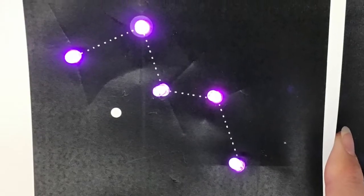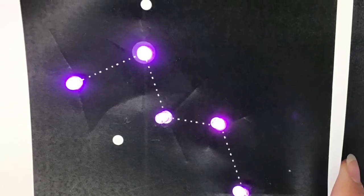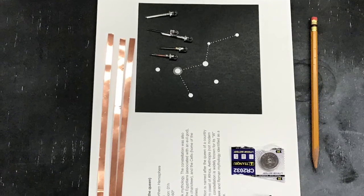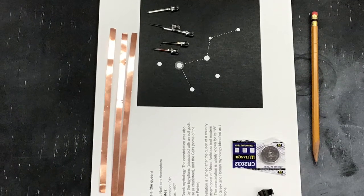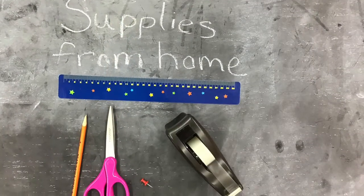Today we are going to make a paper circuit constellation. These are the supplies provided by the library. Here are some things you will need from home.